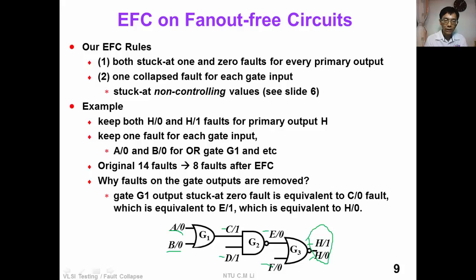Why are the other faults removed? We can easily see from this example that gate G1 output stuck-at-0 (C stuck-at-0) is actually equivalent to E stuck-at-1, which is also equivalent to H stuck-at-0. So we can remove that fault.